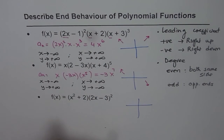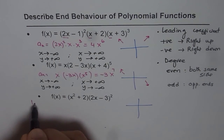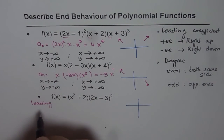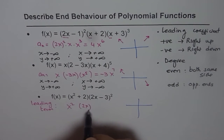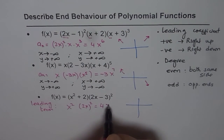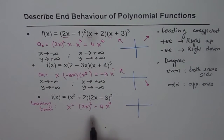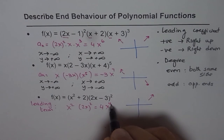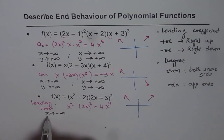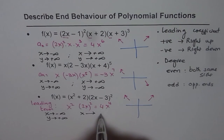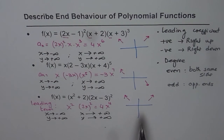Now for the last example, the leading term comes from x squared times 2x whole squared, which is 4x squared. So the leading term is 4x to the power of 4. The leading coefficient is 4, which is positive — that means right side up. The degree is 4, which is even — even means both ends on the same side. So the end behavior is: as x approaches negative infinity, y approaches positive infinity, and as x approaches positive infinity, y approaches positive infinity. Both sides face upwards.